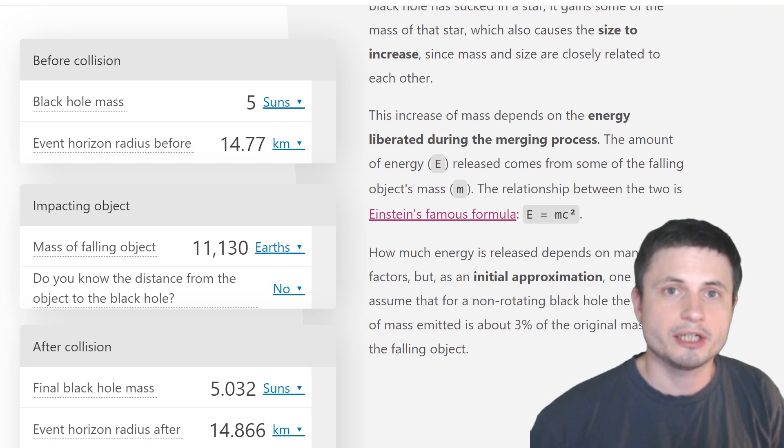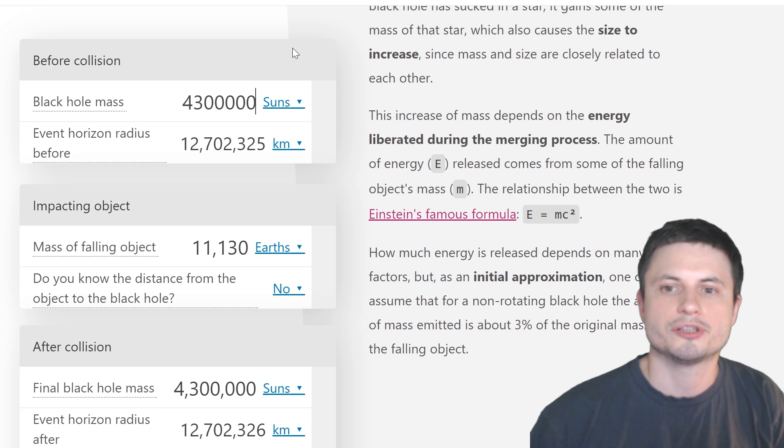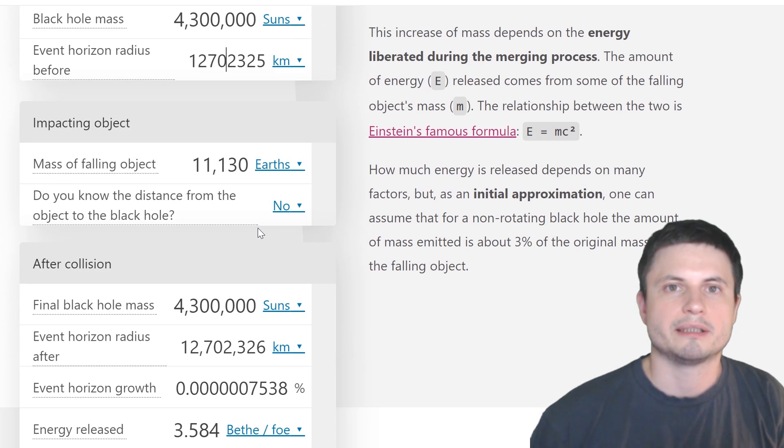And using this calculator here, we can totally figure it out. So first of all, the black hole mass for Sagittarius A star is about 4.3 million masses of the sun. This creates the event horizon of about 12.7 million kilometers. So it's a really, really large event horizon. And now what we have to do is figure out how much mass we need to actually throw into this black hole, if we want to create something equivalent to a million supernova.